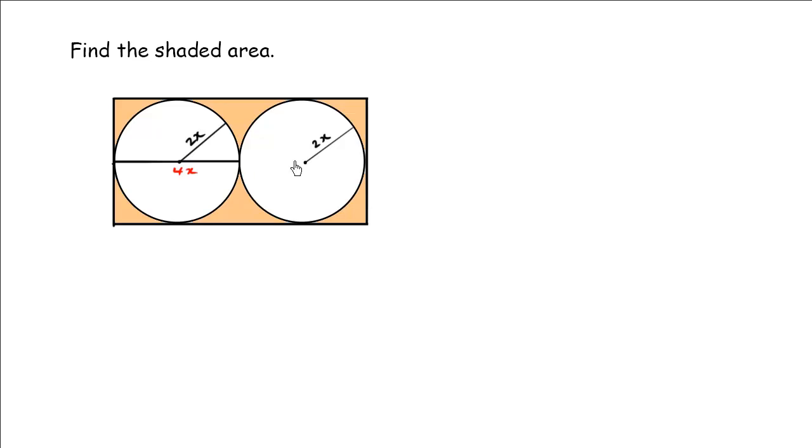Then this radius here is 2x, and then another radius would be 4x, so this total diameter here is 4x. 4x plus 4x would make this rectangle have a width of 8x.